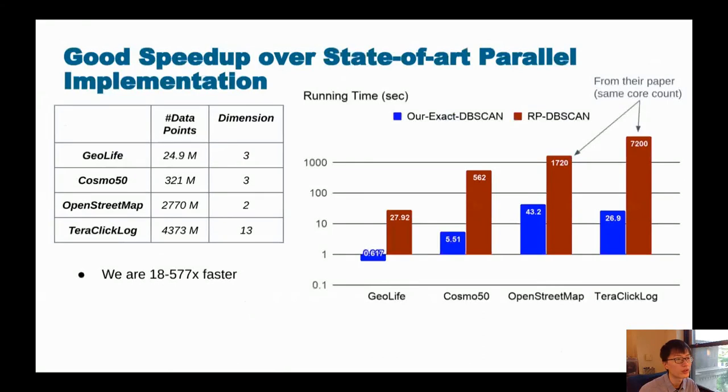We also show a good speedup over the state-of-the-art parallel implementation, which is RP-DBSCAN. This is a distributed MapReduce framework that aims to tackle some of the largest datasets. And we listed the datasets here and tested our method also on the same set of datasets. The last dataset has more than 4 billion points and 13 dimensions. And the bar plot on the right shows the running time plotted in log scale. And we reported the running time of these datasets running on both our own method and on RP-DBSCAN.